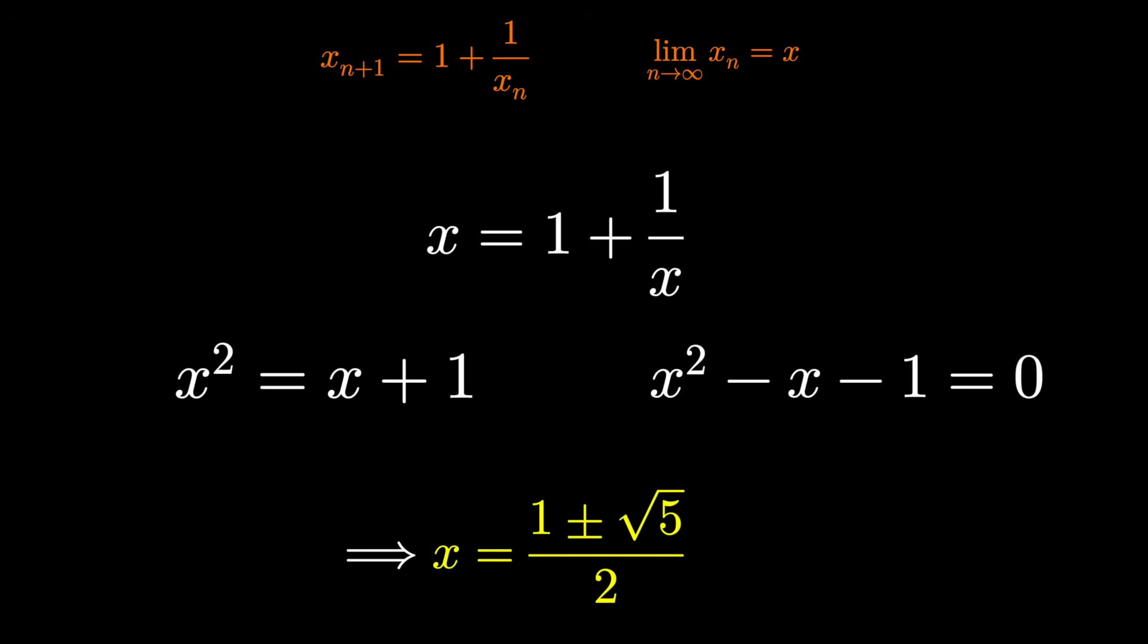Now, since we were only working with positive numbers, let's just throw away the negative number and have 1 plus root 5 over 2. That's that 1.6 number, also known as the golden ratio.